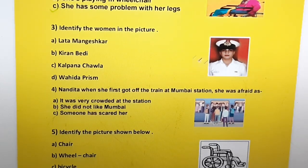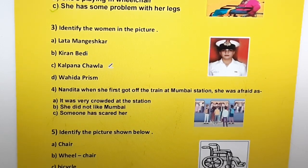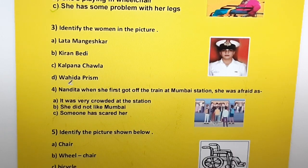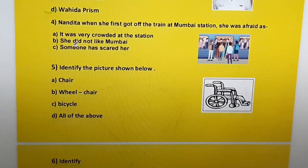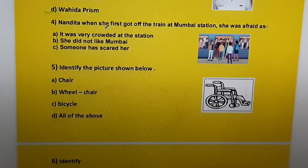Question three: Identify the woman in the picture. Options are a) Lata Mangeshkar, b) Kiran Bedi, c) Kalpana Chawla, and d) Waheeda Prism. The correct answer is d) Waheeda Prism.